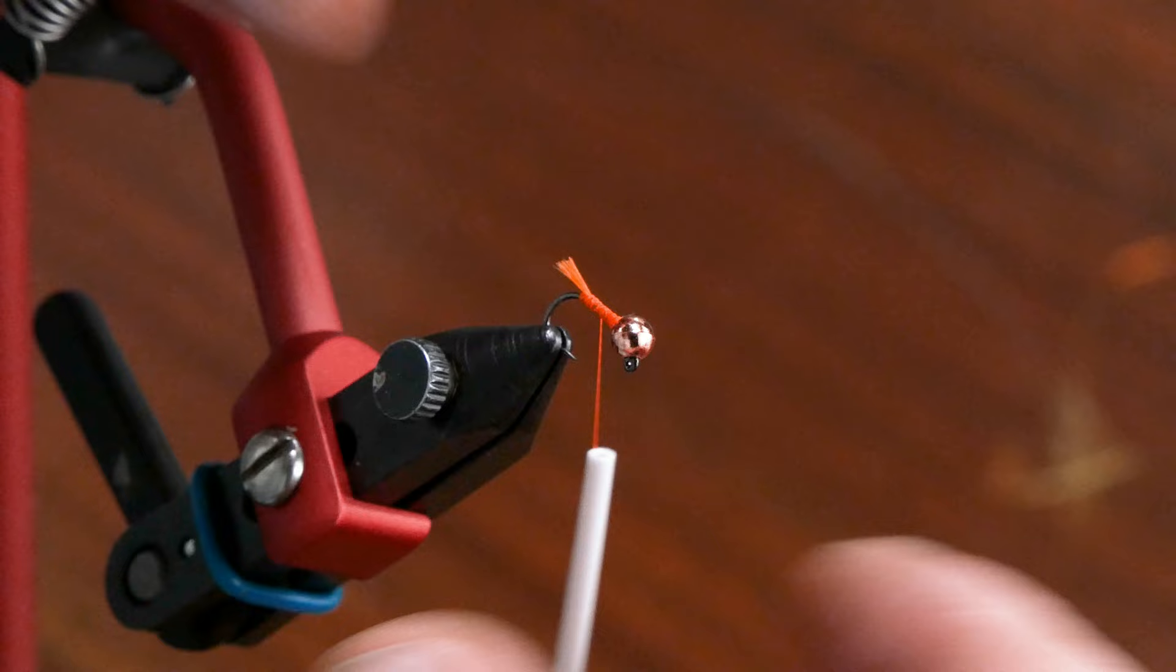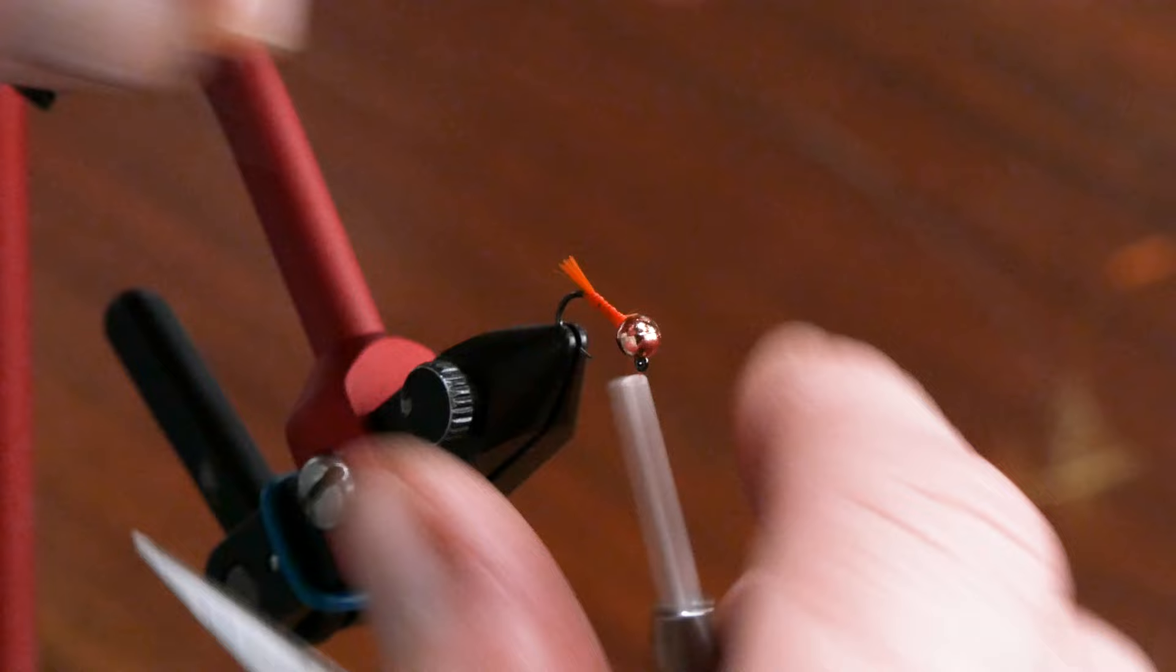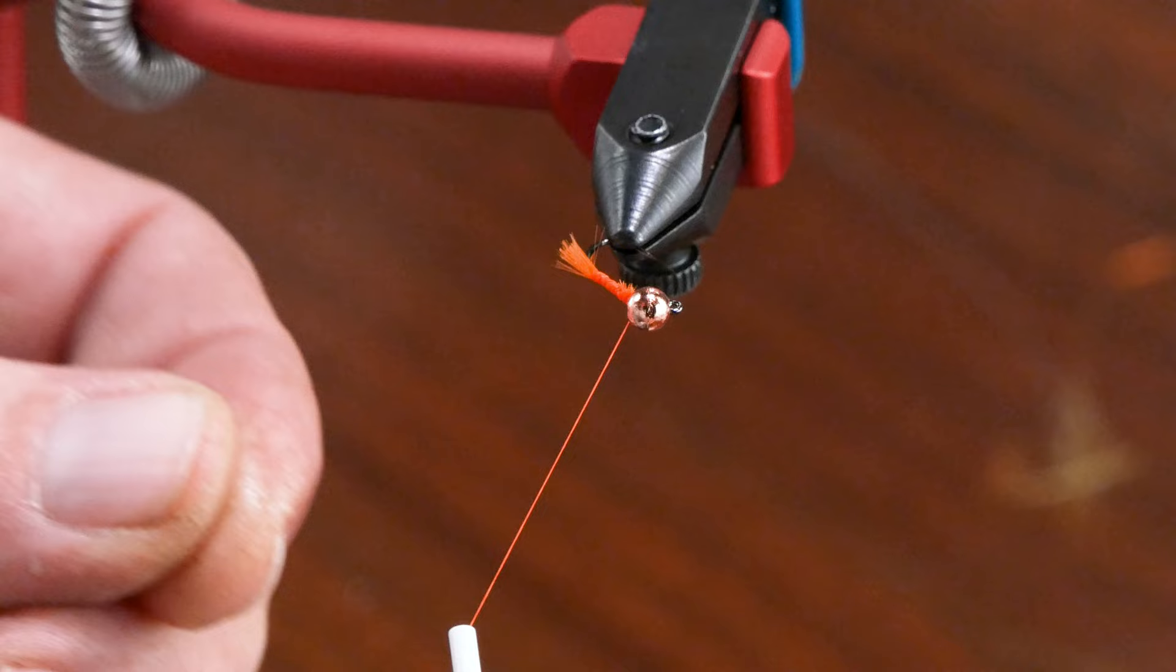Now we're going to tie in a rib and a piece of flash, and we're going to tie these in on opposing sides of the hook for a durability reason. And when we go to wrap these forward, I will cover that durability with you. So we're going to tie our flash in on one side, our rib on the other. We'll start with the rib. It will be on the opposite shank.